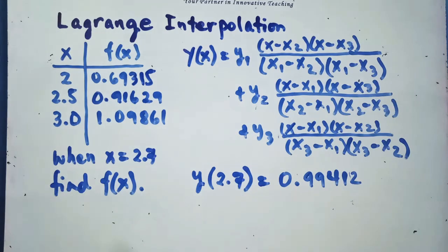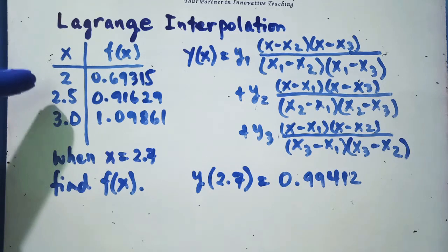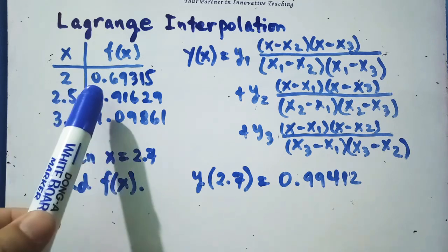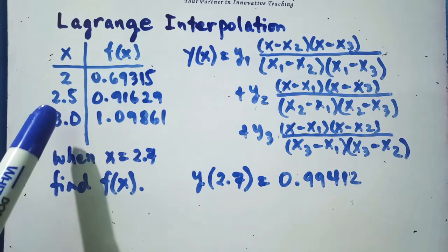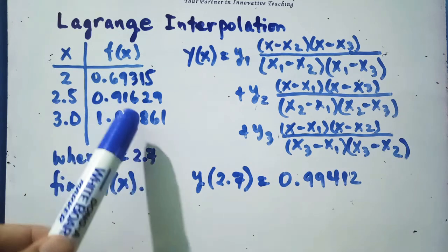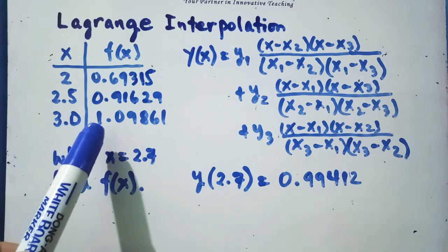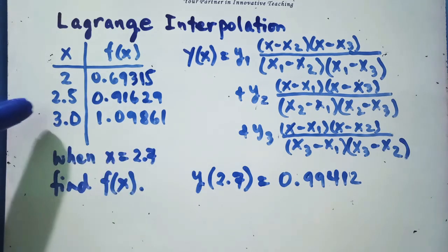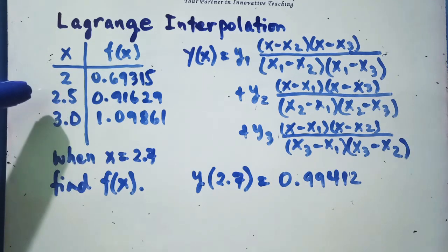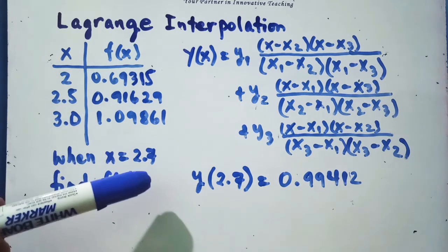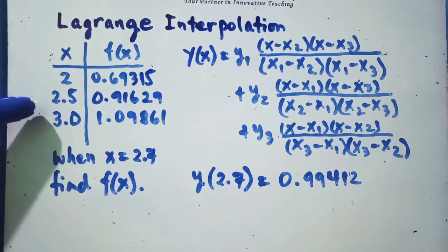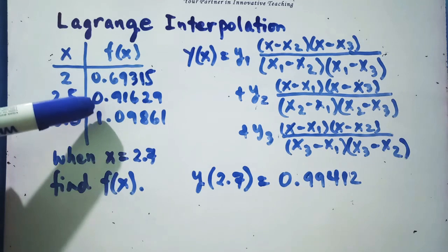Suppose we are given x equals 2, 2.5, and 3.0. The f of x of 2 equals 0.69315, for 2.5 we have 0.91629, and for 3.0, f of x equals 1.09861. Now, when x equals 2.7 — that value is not found in our table — find f of x. So if the value of x equals 2.7, we are going to find its equivalent f of x.